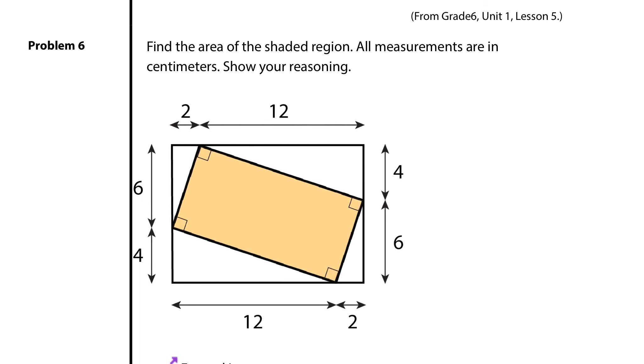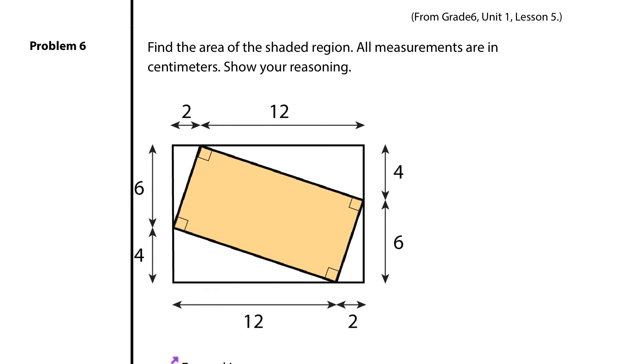Find the area of the shaded region. All measurements are in centimeters and show your reasoning. Well, I see two rectangles here. The shaded region is what we're looking for. Let's find the area of the first one, the big one first, that big white space. This distance here is going to match this distance here, which is 2 and 12, so this will be 14. Then our up and down is 4 and 6, so 10. So this area will be 14 times 10, which is 140 square centimeters.